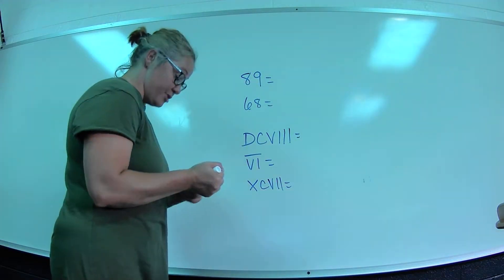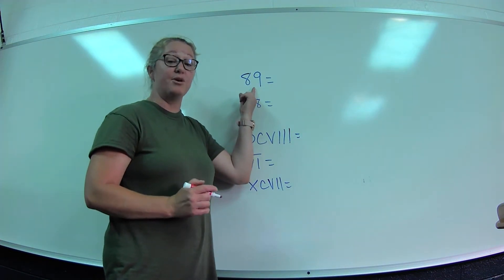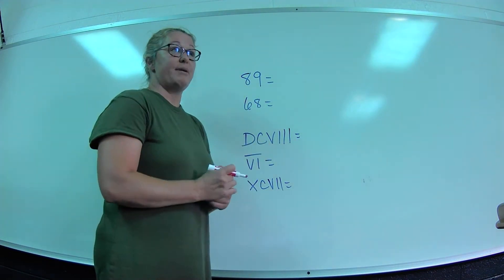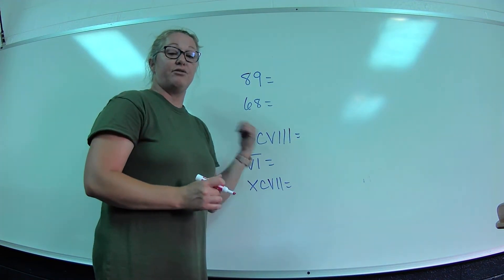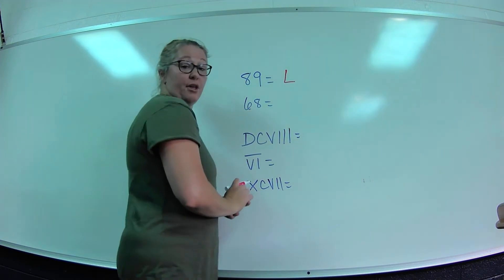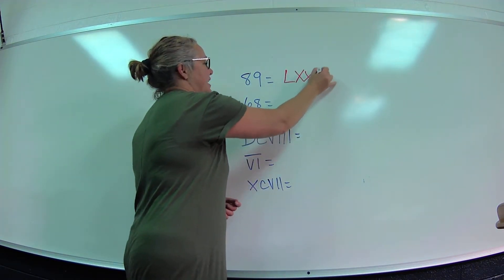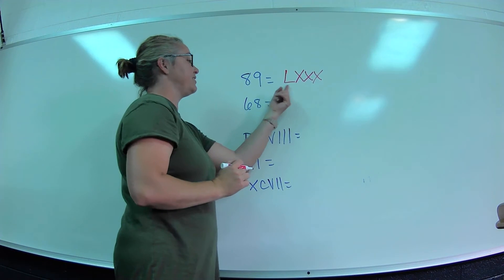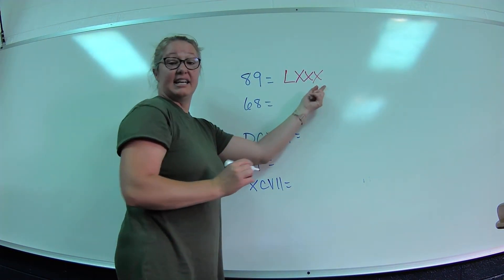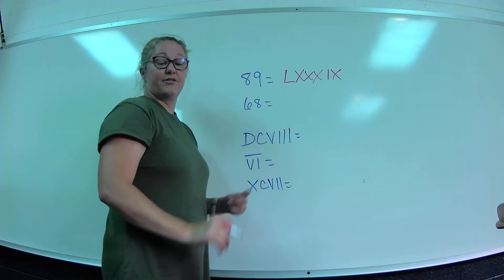Let's put some Arabic numbers into Roman numerals. We have 89. First I need to make 80 — the best way is 50 plus 30. 50 is L, and 30 is XXX, so L-X-X-X gives us 50, 60, 70, 80. Now I need 9.